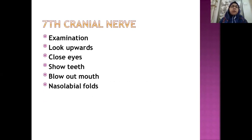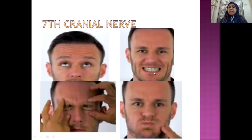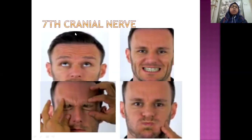For examination of the seventh cranial nerve, tell the patient to look upward, close the eyes as forcefully as possible, show the teeth, blow out the mouth, and look for nasolabial folds. You can see forehead wrinkling and the closing of the eyes forcefully. The examiner should try to open the eyes while the patient closes them forcefully, and tell the patient to show the teeth and blow out the cheeks. This tests the motor component — the muscles of facial expression.